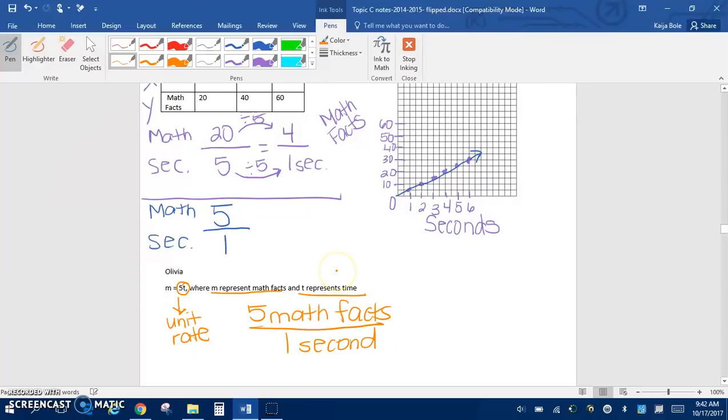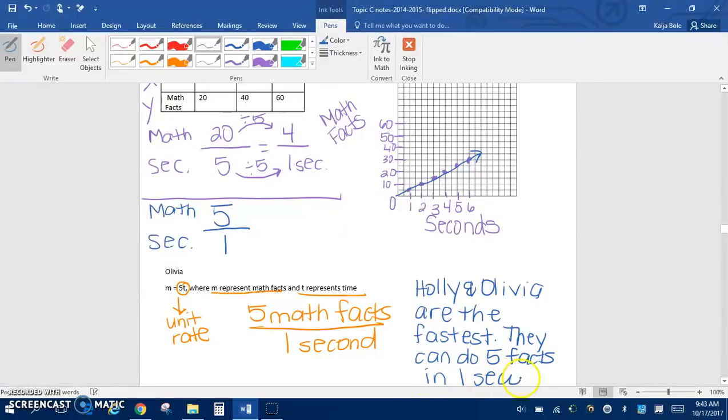Okay. So if we compare all 3 of these, we can see that both Holly and Olivia can work at the same rate. So we would say then that Holly and Olivia are the fastest and then we can say they can do 5 facts in 1 second. Alright. So that's the first example.